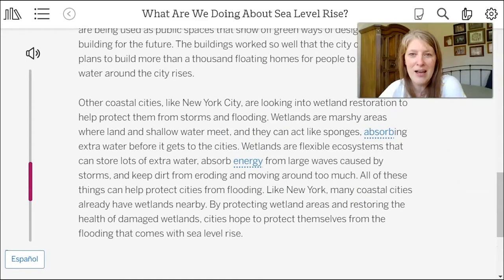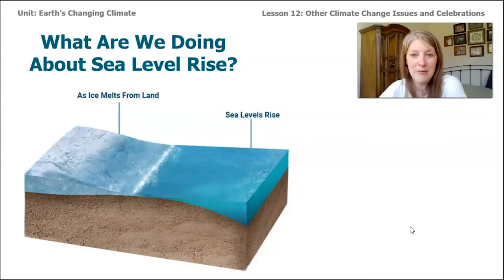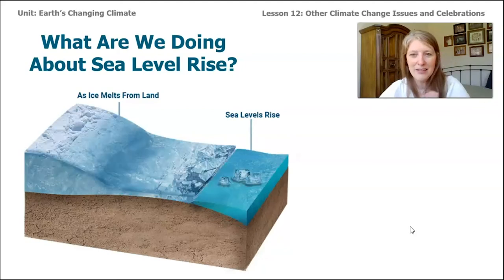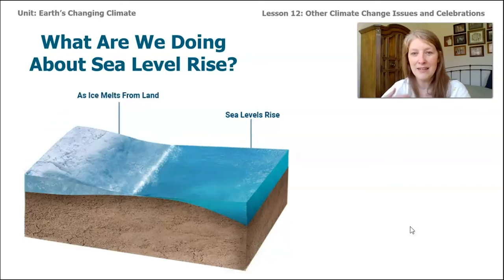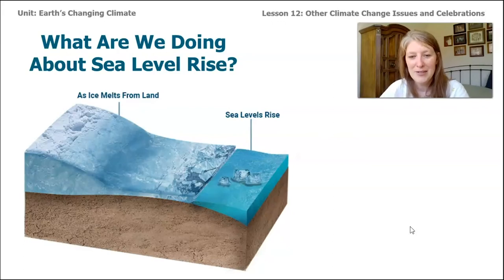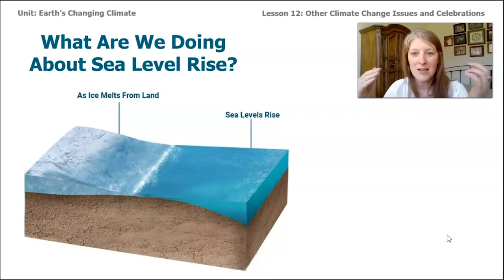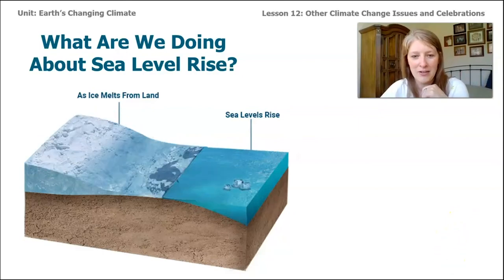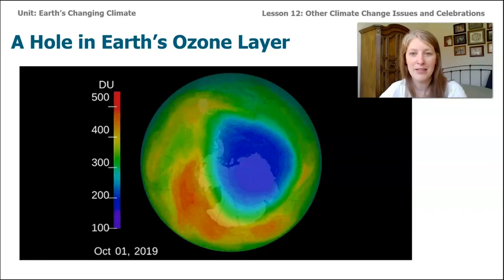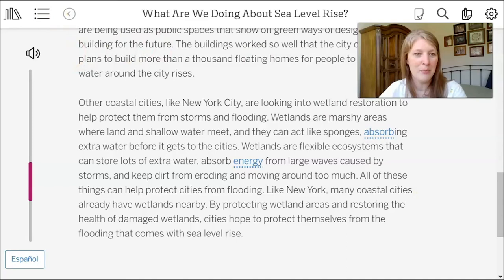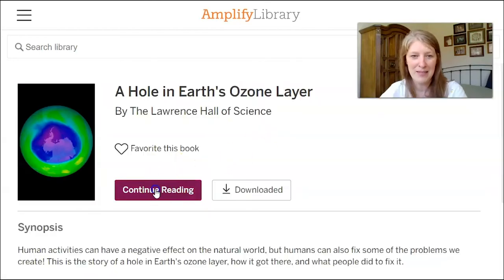There are a lot of really hopeful things that cities are doing to try to solve the problem of sea level rise. This article has been about solving a problem, but the next article is about stopping a problem. The title of this article is 'A Hole in Earth's Ozone Layer.' Let's read that by going to Amplify Science, going back to the library, and choosing the article called 'A Hole in Earth's Ozone Layer.'